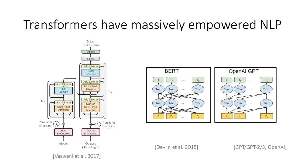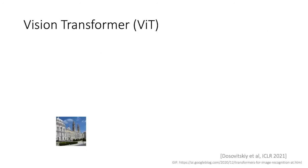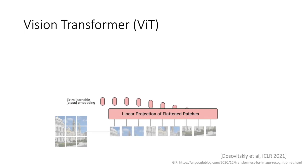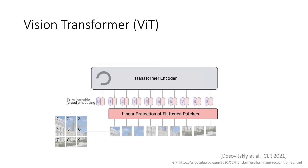To recap, the transformer architecture was first introduced in the seminal paper "Attention is All You Need" from Google in 2017. This architecture, which replaced traditional recurrent networks with a multi-head attention mechanism, has become the dominant architecture in NLP. The original text transformer takes as input a sequence of words, which it then uses for classification, translation, or other NLP tasks.